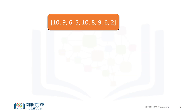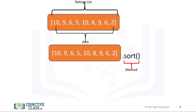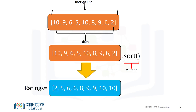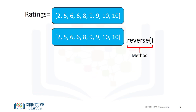We have the ratings list represented in orange. The data contained in the list is a sequence of numbers. We call the sort method — this changes the data contained in the object; you can say it changes the state of the object. We can also call the reverse method on the list, changing the list again by reversing the order of the sequence within the object.